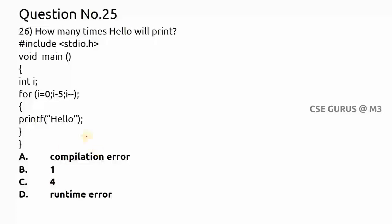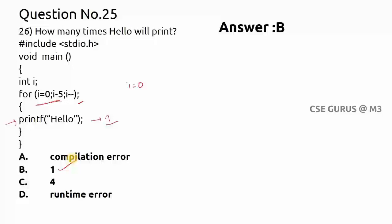Question 25: how many times will 'hello' print? You can see a for loop with a semicolon after it. Because of that semicolon, the printf statement does not belong to the for loop. So no matter how many iterations the for loop runs, once it exits, printf executes only once. Remember: when there is a semicolon after a for loop, the body is empty. The answer is B.